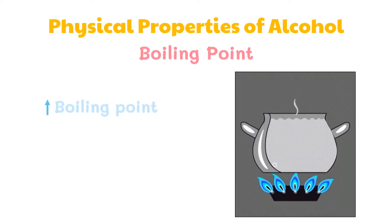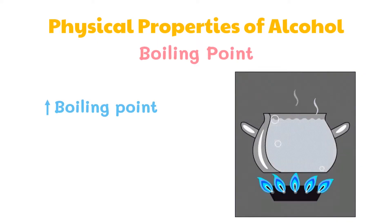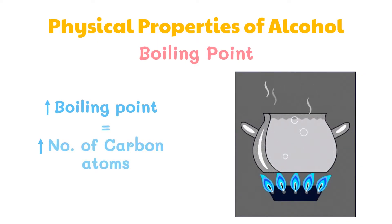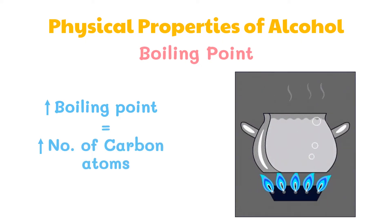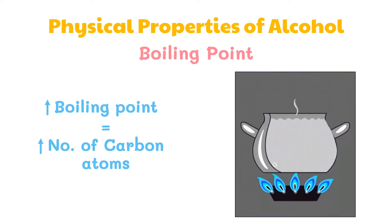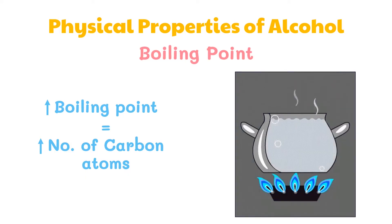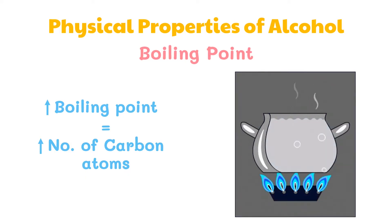The boiling points of alcohols increase as the number of carbon atoms increases. The patterns in the boiling points reflect the patterns in intermolecular attractions — that is, hydrogen bonding between hydroxyl groups of alcohol molecules.